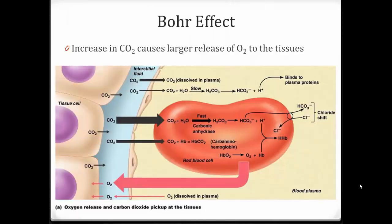Now let's tie that back in with how oxygen is transported and the Bohr effect. The Bohr effect is the shift of the oxyhemoglobin dissociation curve to the right. An increase in CO2 causes a larger release of oxygen — one of the factors that shifts the curve right, making more oxygen available to the tissues. Let's look at this in association with what we just discussed about carbon dioxide transport.